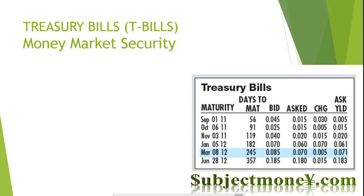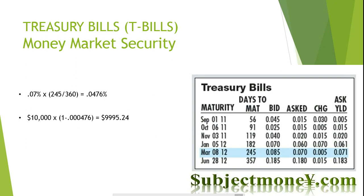Take a look at the highlighted T-bill dated March 8, 2012. The maturity date is 245 days away and the yield in the ask column is 0.07%. This means that the dealer was selling the bill at a discount from par value of 0.07% times 245 divided by 360, equaling 0.0476%. Therefore, a bill with a $10,000 par value could be purchased for $9,995.24. The formula used to get this number is listed on the screen. On the bid yield of 0.085%, the dealer would have purchased the T-bill for $9,994.22.